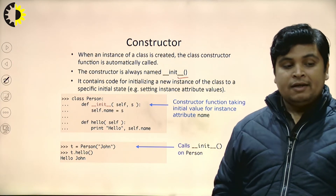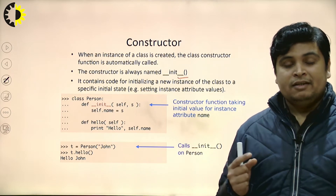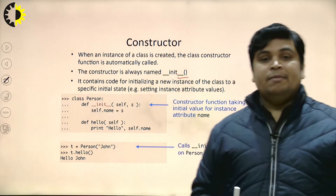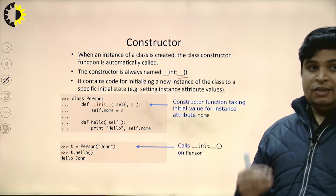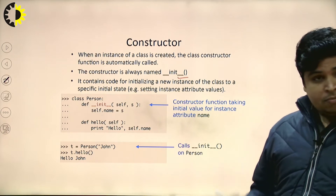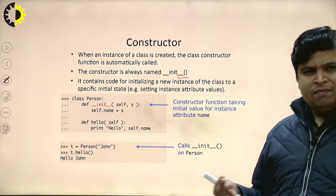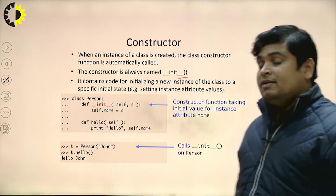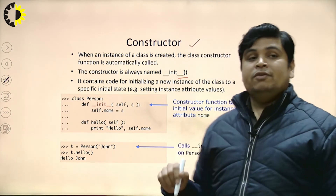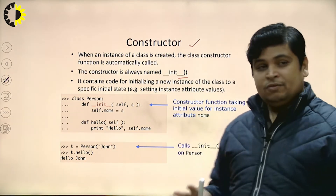In banking, for the banking server, every customer is treated as an object. At the time of customer creation, we require a lot of information like customer name, customer address, customer mobile number, etc. At that time, constructor plays a very vital role. If you want to initialize something at the time of object creation, then constructor is used to initialize.